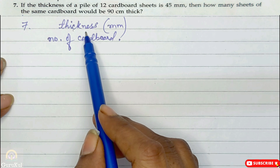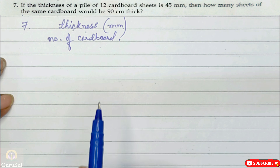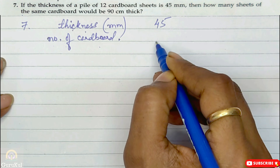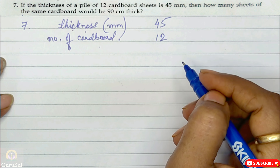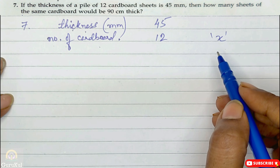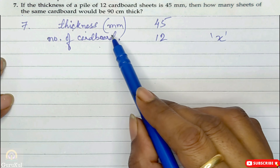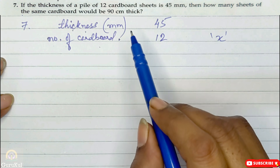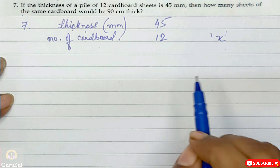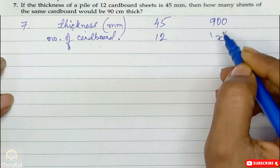For question 7 — thickness unit mm and number of cardboard. One pile has 12 cardboard sheets and its thickness is 45 mm. We need to find how many sheets would be 90 cm thick. Note: the unit here is centimeter but we are dealing in mm. It is always advisable to convert from bigger to smaller unit; converting smaller to bigger gives decimal answers. So 90 cm converts to 900 mm.